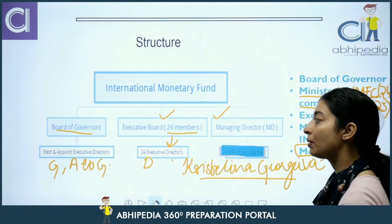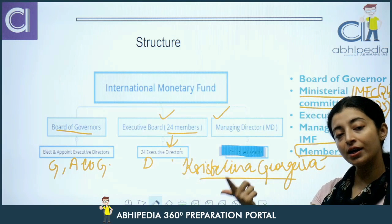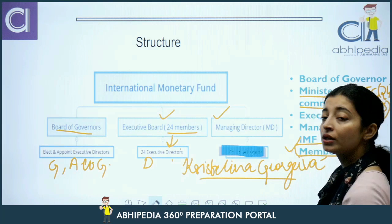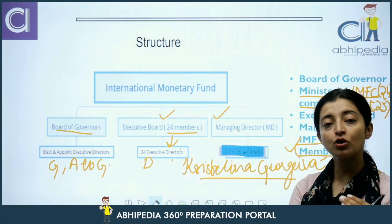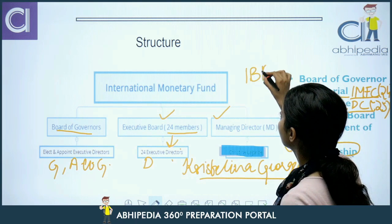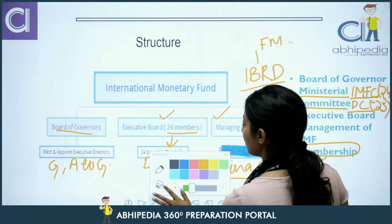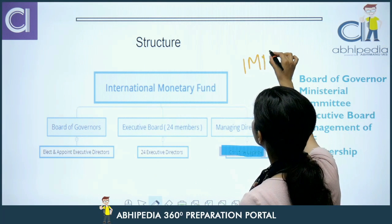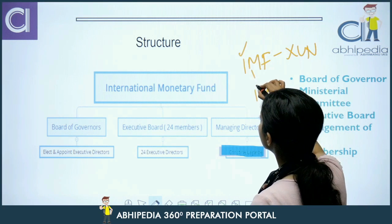Ab hum baat karte hain membership of IMF ki. Board of Governors decide karta hai ki jo member nation hai jo IMF ka member banna chahta hai, uska quota kitna hoga aur usko Special Drawing Rights kitne allocate kiye jayenge. Koi bhi nation IMF ka member ban sakta hai — zaroori nahi hai ki woh nation UN ka bhi member ho. It is not mandatory for a nation to be a part of UN to become a member of IMF. However, to become a member of IBRD, it is mandatory for a nation to be a member of IMF first.